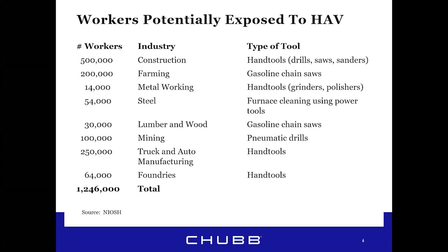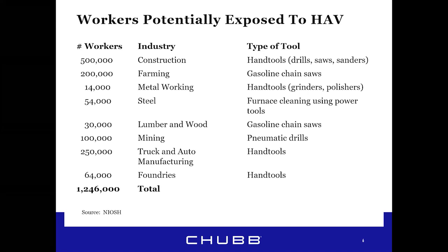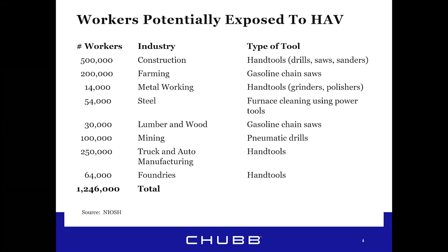Here are some statistics from a 1974 NIOSH study, where they estimated that 1.2 million workers in the US were potentially exposed to hand-arm vibration and therefore at risk of developing hand-arm vibration syndrome. Admittedly this is very dated material, but old data is still good data — it's the first and most thorough study I found. From this study, NIOSH released a bulletin in 1983 stating that vibration syndrome is probably severely underreported by workers and health professionals.